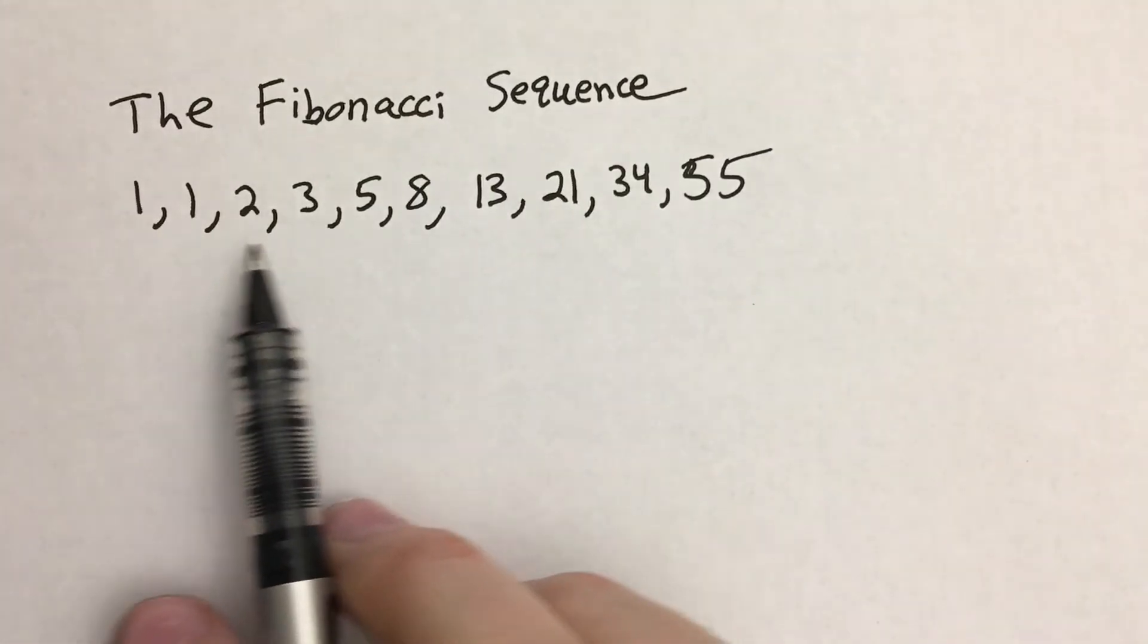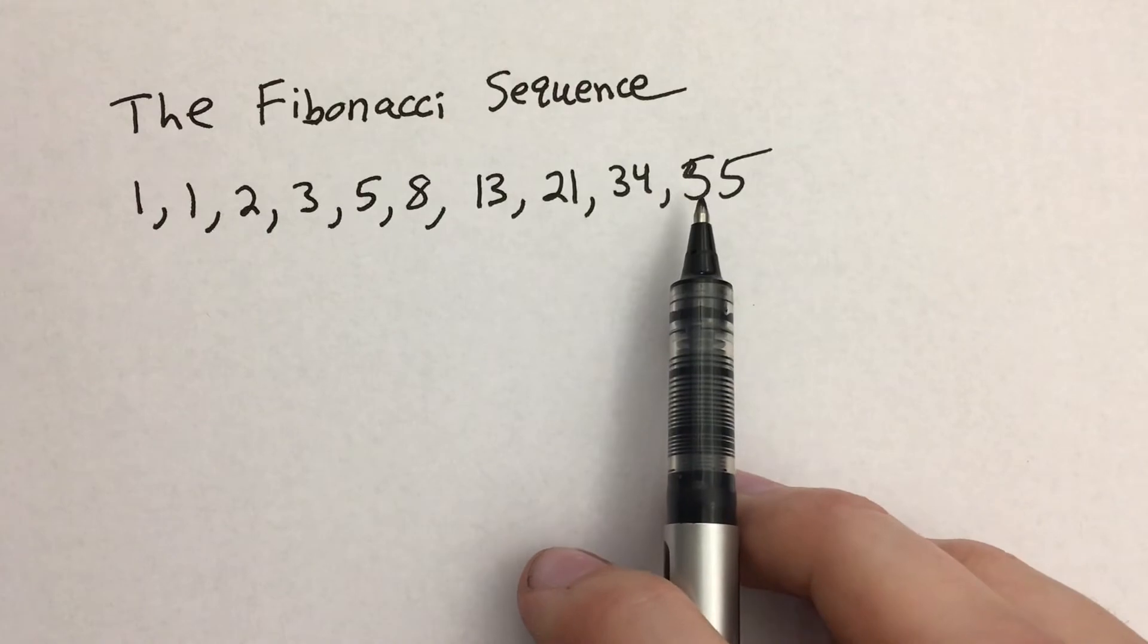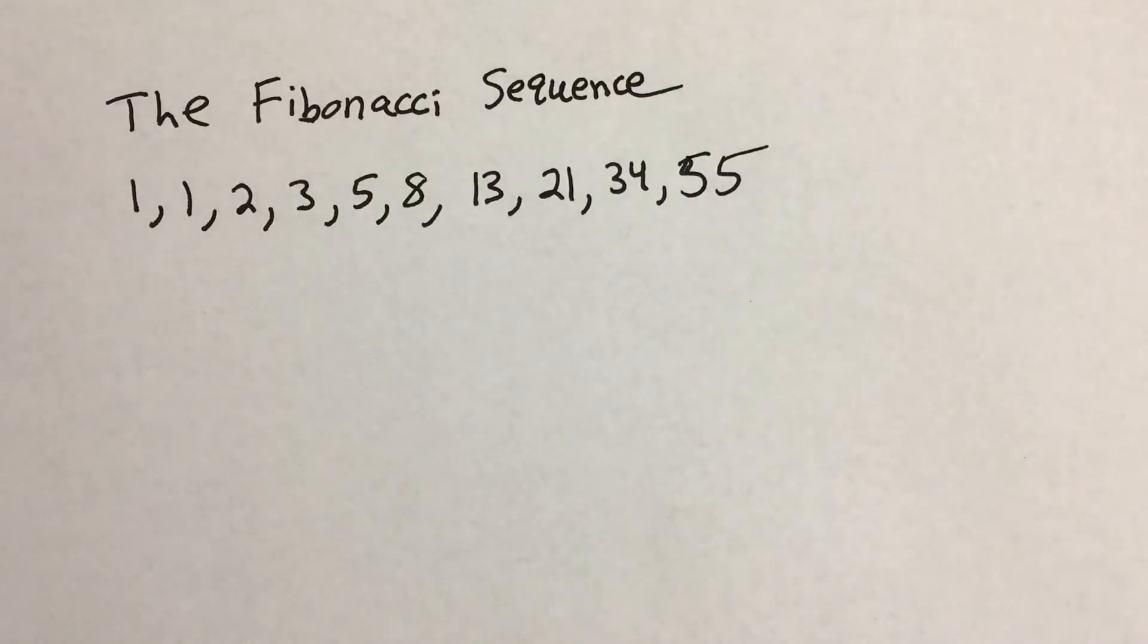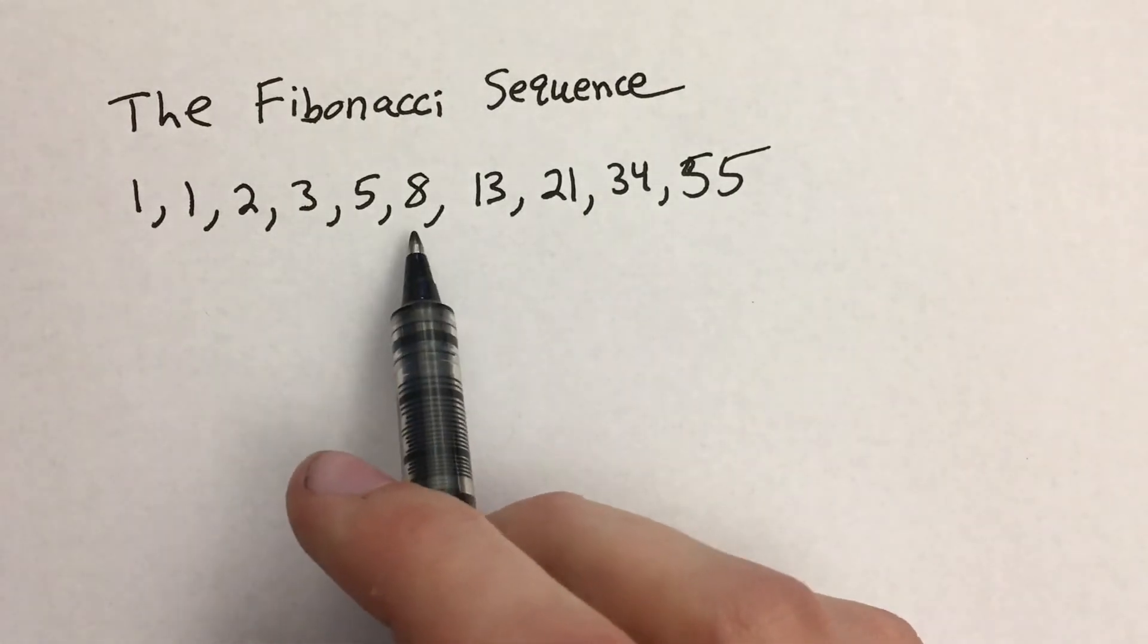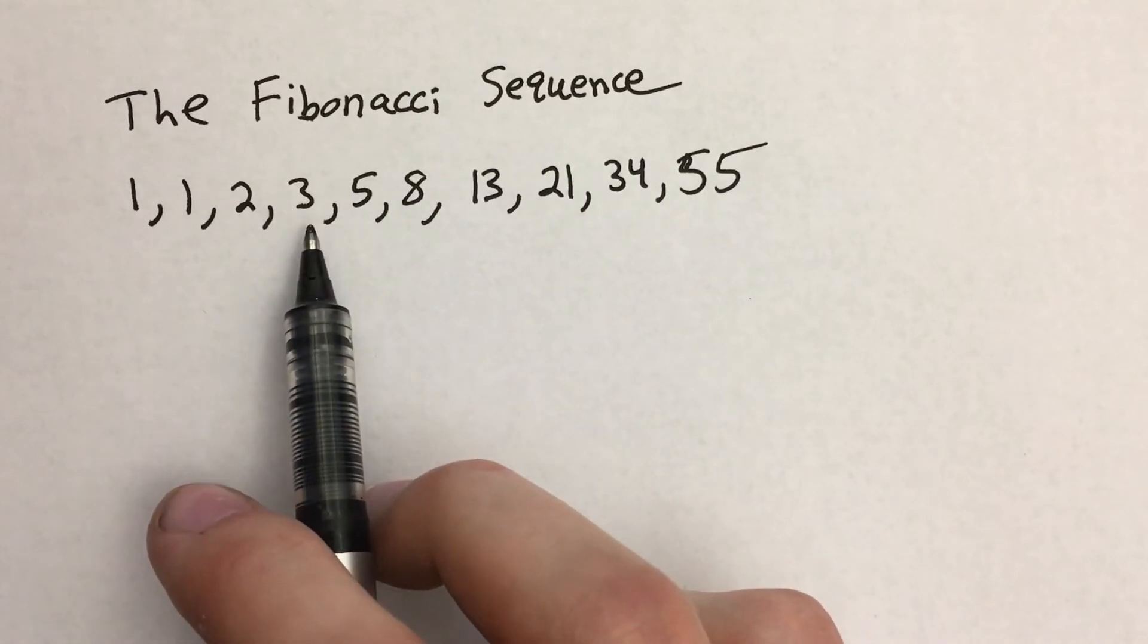Now I've written out here the first 10 terms in the Fibonacci sequence. What you may already know about the Fibonacci sequence is that each term is the sum of the two terms that come before it.